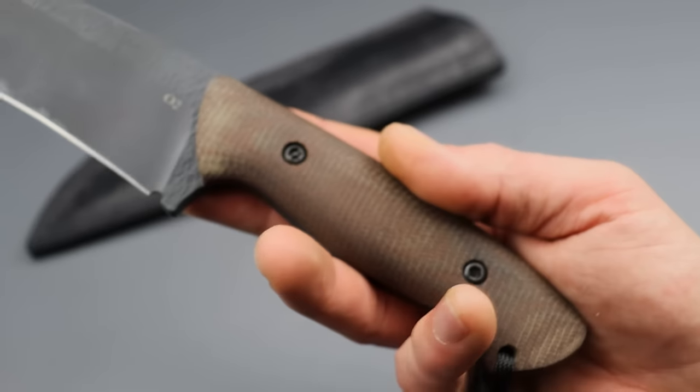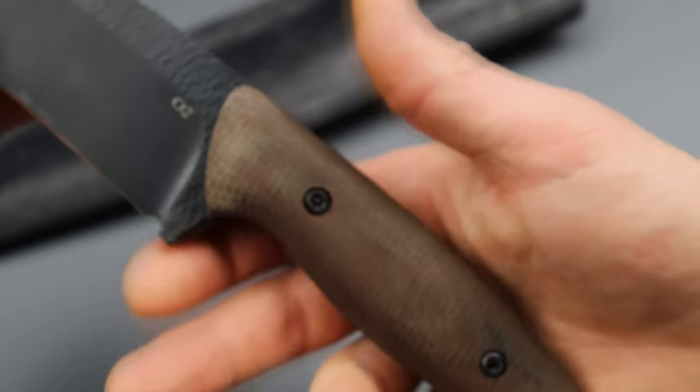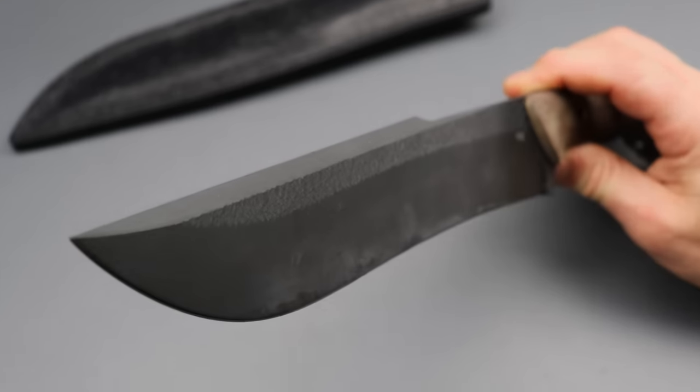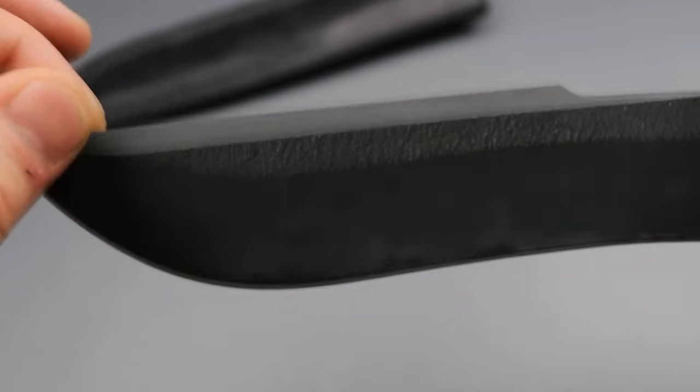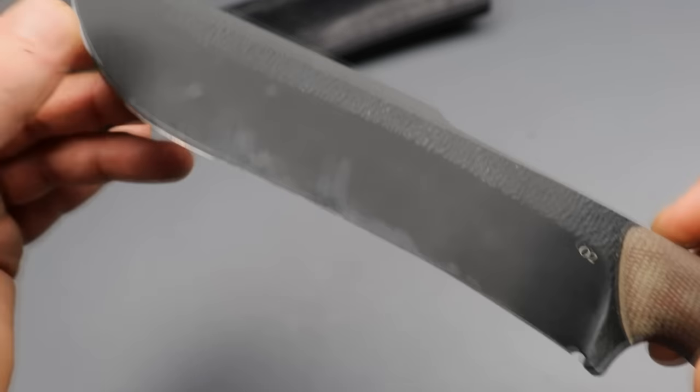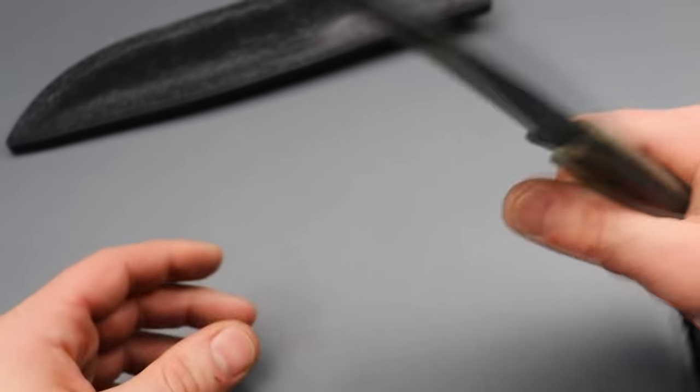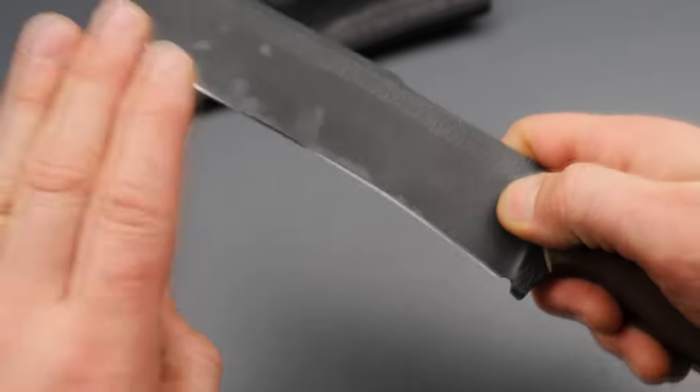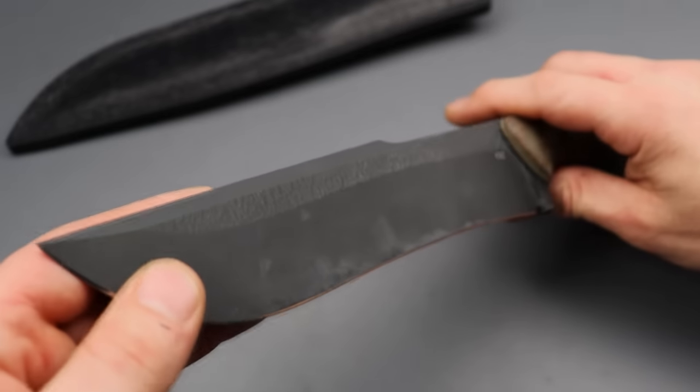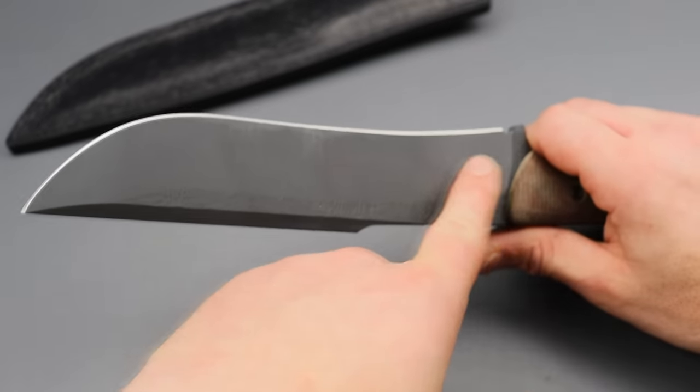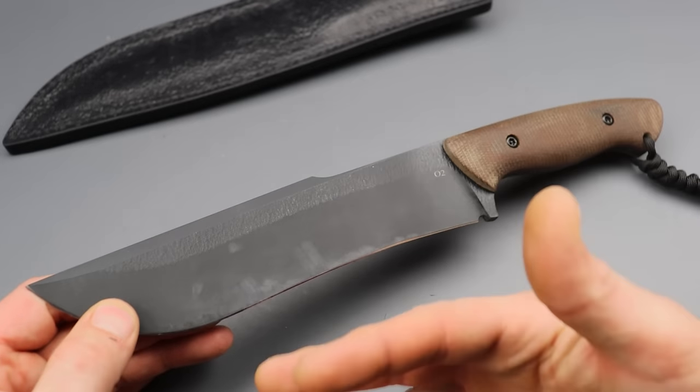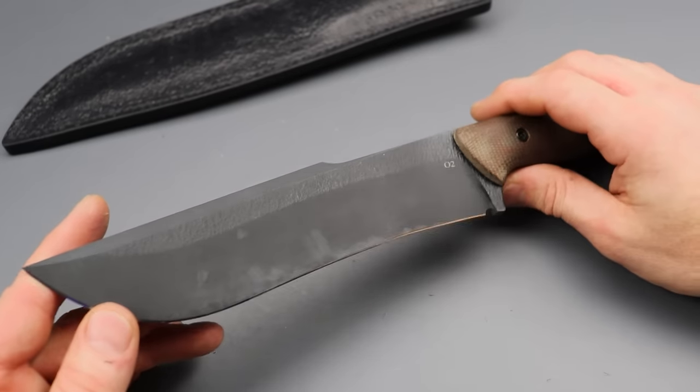The handle is gorgeous micarta and this thing is so comfortable in the hand. The blade shape is a harpoon straight back. I love this swedge with a light recurve. What's cool about this recurve is you're going to get the benefits of the recurve but when sharpening it you're going to be able to sharpen it either on a stone or any way you want. The recurve is so long you won't have the struggles with having to use a round stone or anything like that.